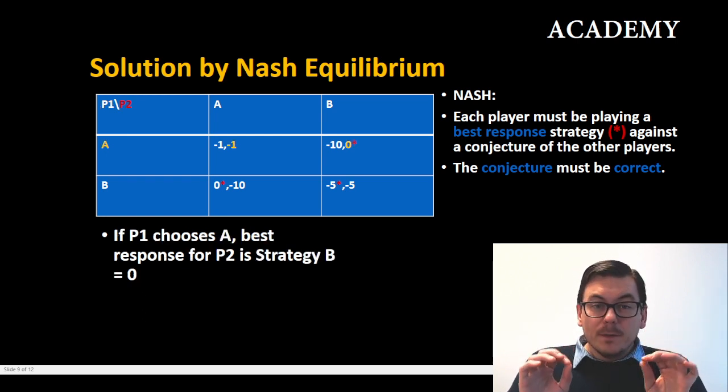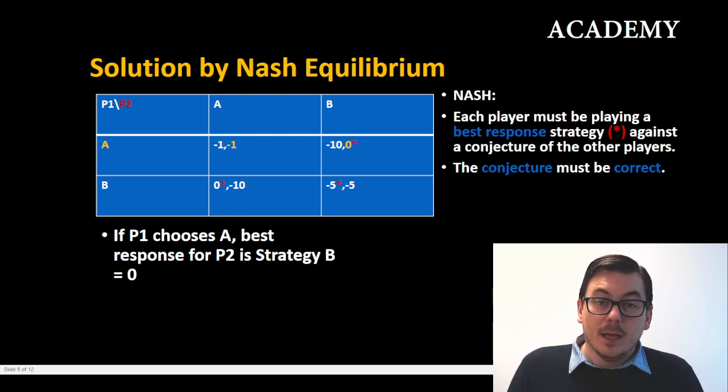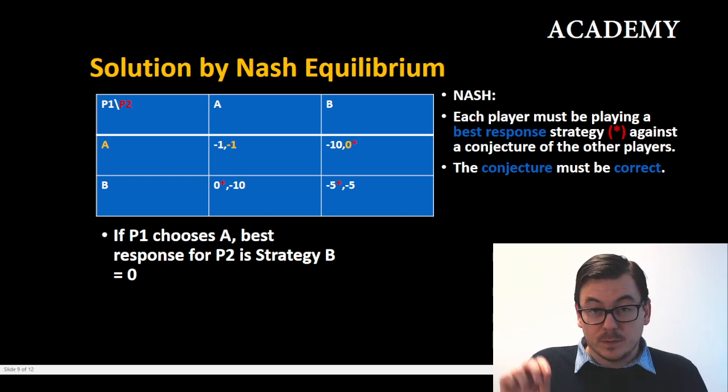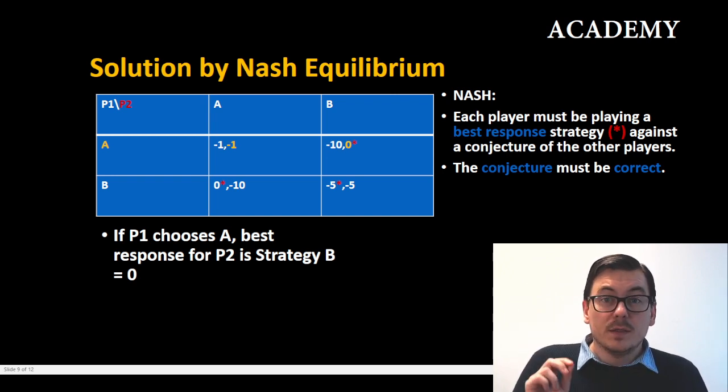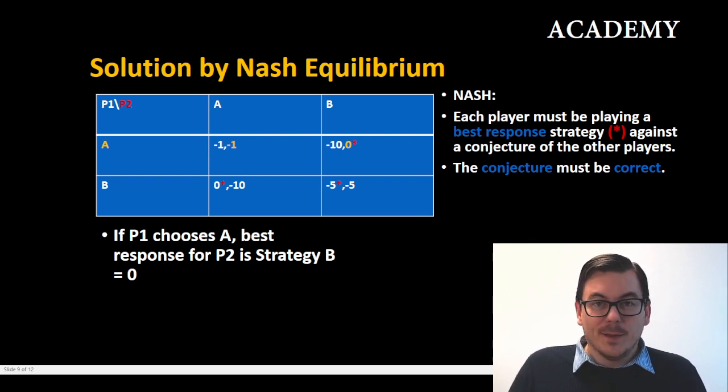So if player one chooses strategy A, player two can either get minus one from choosing strategy A or zero from strategy B. Of course again the best response here would be zero because it's better than minus one.